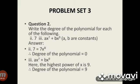Question 2: Write the degree of the polynomial for each of the following. Subdivision 2: 7. Solution: 7 equals 7x raised to 0, therefore the degree of the polynomial is 0. Subdivision 3: a into x raised to 7 plus b into x raised to 9, where a and b are constants. Here the highest power of x is 9, therefore the degree of the polynomial is 9.